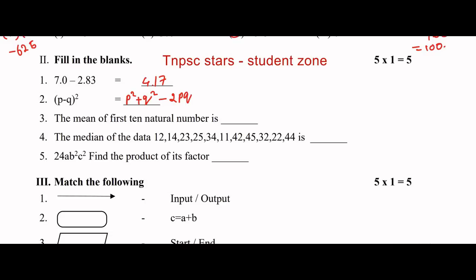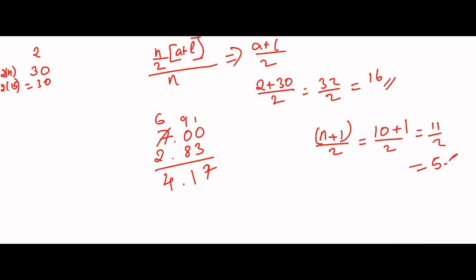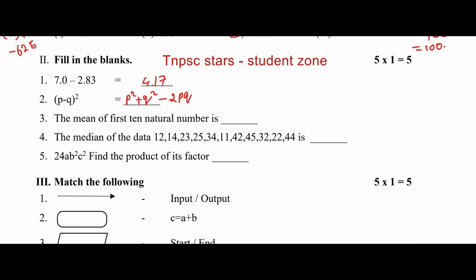The mean of the first 10 natural numbers. To find the mean, use the formula: sum of first n natural numbers is n into (n plus 1) divided by 2, then divide by n. This simplifies to (n plus 1) divided by 2. So for n equals 10: (10 plus 1) divided by 2 equals 11 divided by 2 equals 5.5. Answer: 5.5.